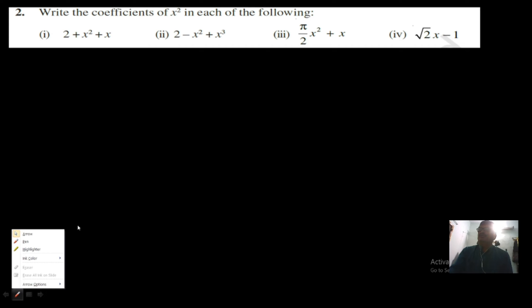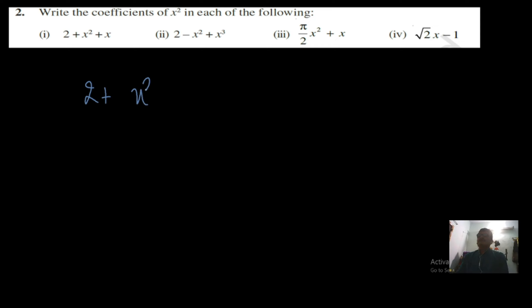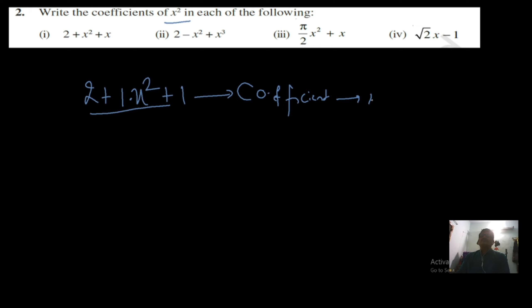The next question asks you to write the coefficients of x² in each of the following. First, understand what coefficient means. The first expression is 2 plus x² plus x. The coefficient of x² is asked — there is nothing visibly written with x², which means it is 1 into x². So the coefficient here is 1.